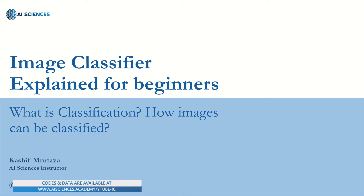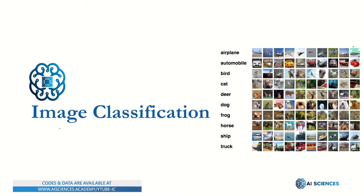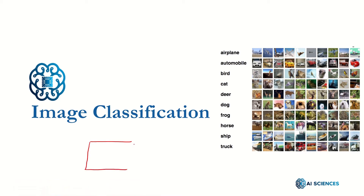Let's dive in and first see what is image classification. The image classification problem looks like the following. You have an image classification system, sometimes known as the image classifier. It takes an image as input — it might be an RGB image or a grayscale image, or any valid format for an image.